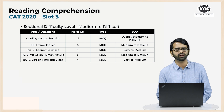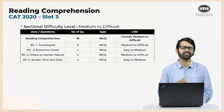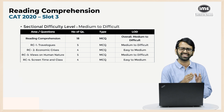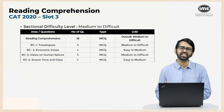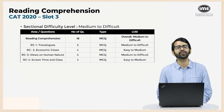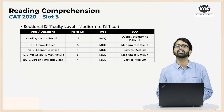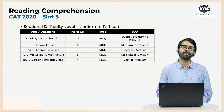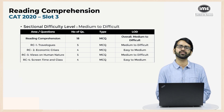The first passage was on travelogues, with five MCQ questions at medium to difficult level. The second passage was on economic crisis with four MCQ questions at easy to medium level. The third passage was on views on human nature with five MCQ questions and was among the more difficult passages — classified as medium to difficult. The fourth passage on screen time and class had four MCQ questions and was among the easier passages, classified as easy to medium.